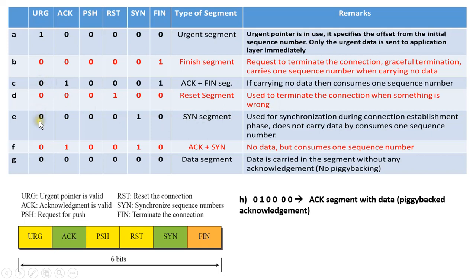The next bit pattern for the control flag is 0,0,0,0,1,0. The bit corresponding to the sync flag is set to 1. So it is the synchronization segment, used for synchronization during the connection establishment phase. When this sync segment does not carry any data, it consumes one sequence number.